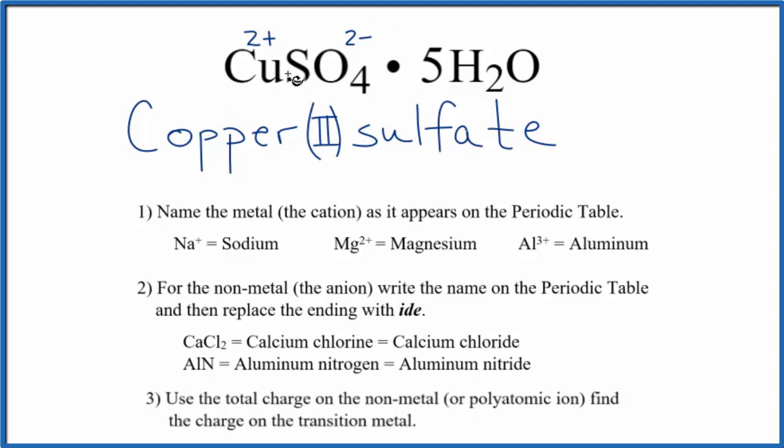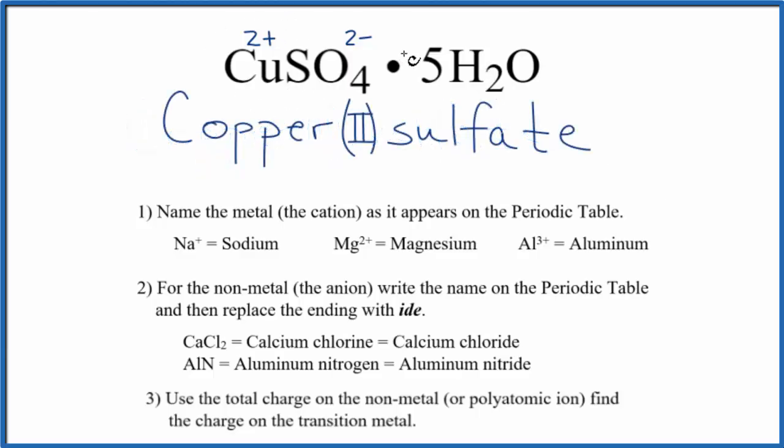So the name for CuSO4 is copper 2 sulfate. The 2 refers to the charge on the transition metal. When we see this dot here, this means that we have a hydrate. We have water molecules around the compound, in this case, the copper 2 sulfate.